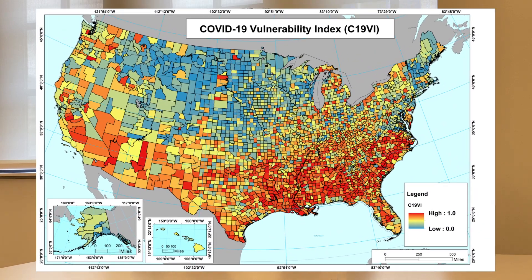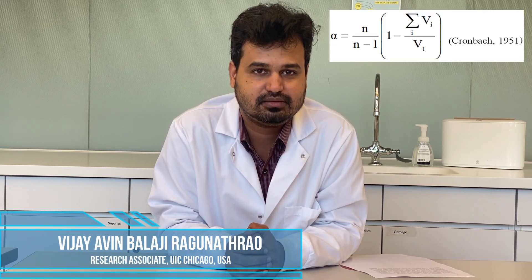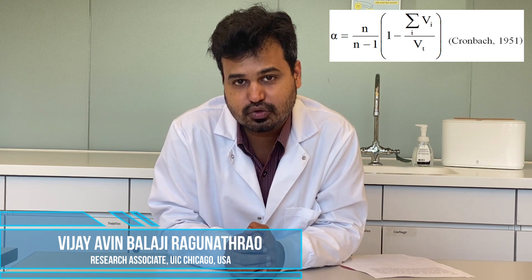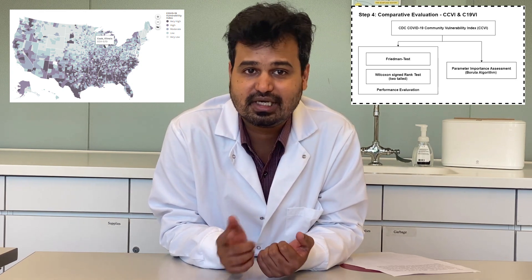Our C19VI index describes that 575 counties have very high and 765 counties have high COVID-19 vulnerability. Receiver operating characteristics area under the curve (ROC-AUC) is used for model validation. Cronbach's alpha is also used for model validation. C19VI is further compared with the CDC analog CCVI — the COVID-19 Community Vulnerability Index — using the Friedman and Wilcoxon signed-rank test.